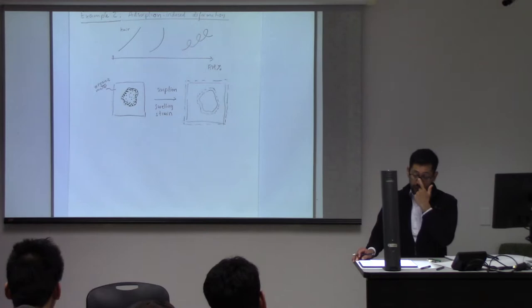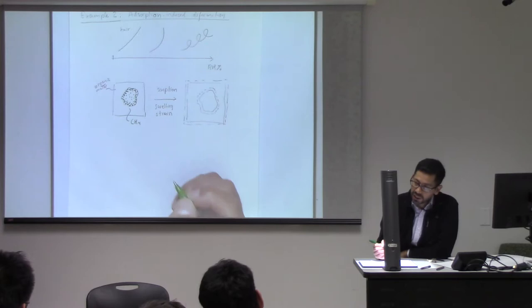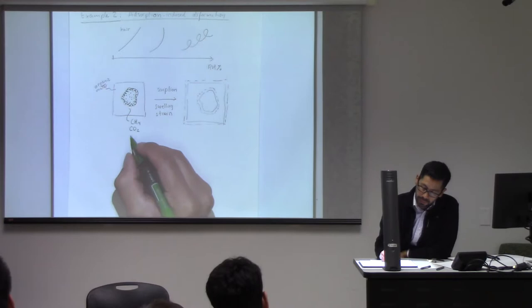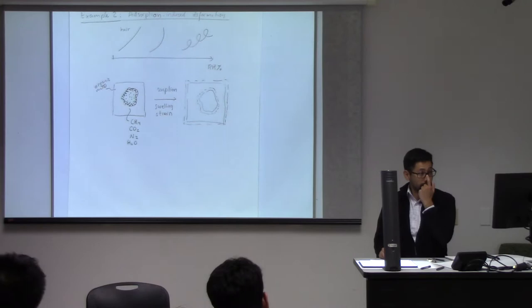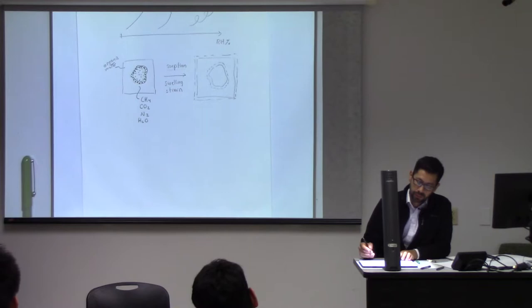When you have desorption, you will tend to have a shrinkage strain. This sorbed fluid can be — especially we're talking about gas — can be methane, can be CO₂, can be nitrogen, can be H₂S, can be many things. So let's talk a little bit, before we go into the mechanics part, let's talk about sorption. What is sorption and how can you describe sorption?